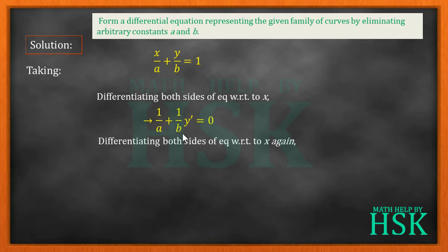Okay, 1 upon b is the coefficient, therefore differentiation of y dash would be y dash dash, that is the second derivative of y with respect to x, that is d2y upon dx squared. So I am going to get this as 0 plus 1 upon b y dash dash is equal to 0, or y dash dash is equal to 0.